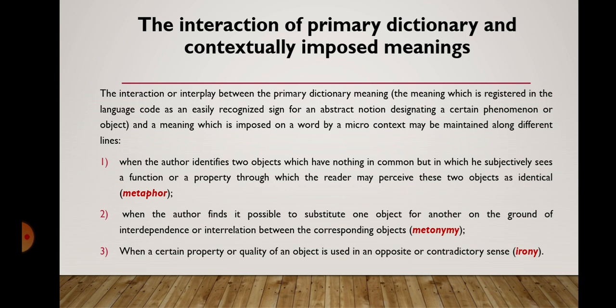The second line is when the author finds it possible to substitute one object for another on the ground of interdependence or interrelation between the corresponding objects. And this is metonymy. The third line is when a certain property or quality of an object is used in an opposite or contradictory sense. And this is irony.